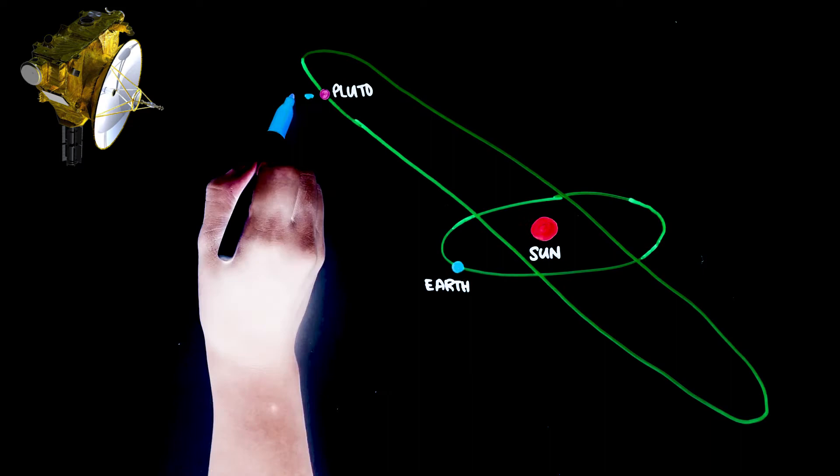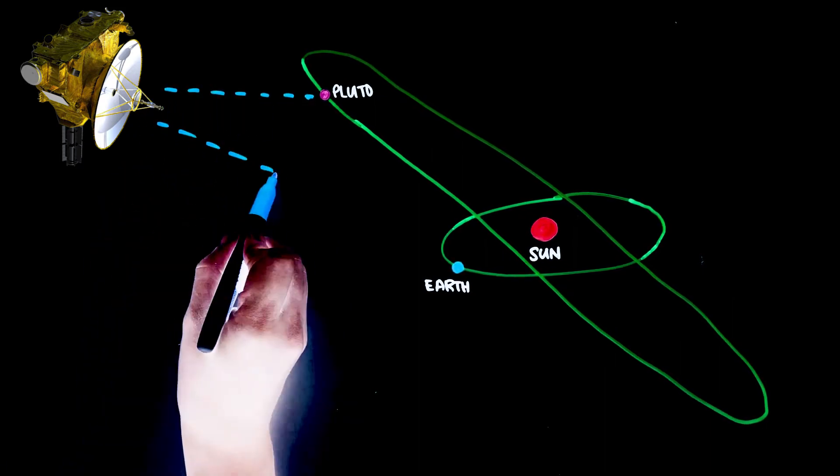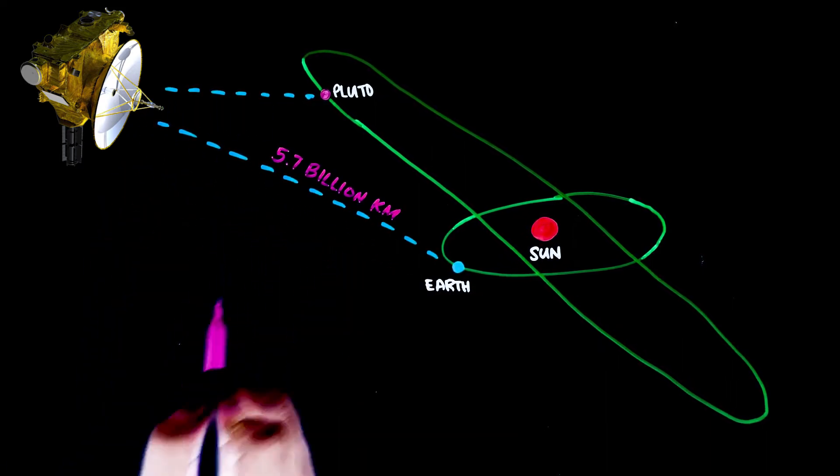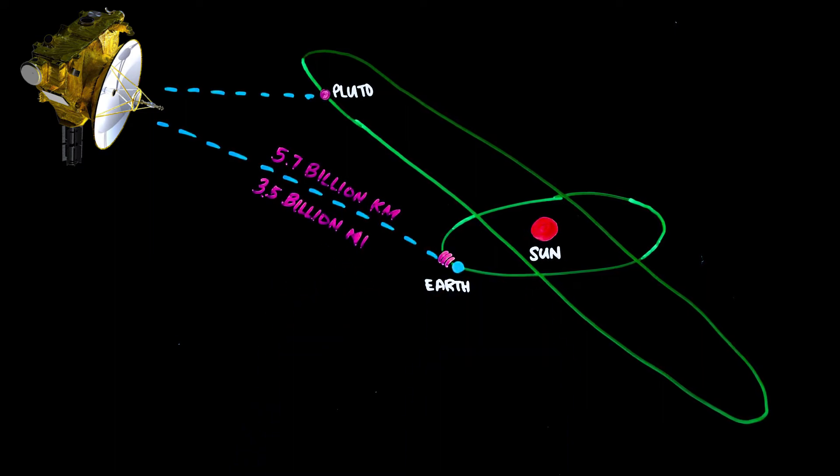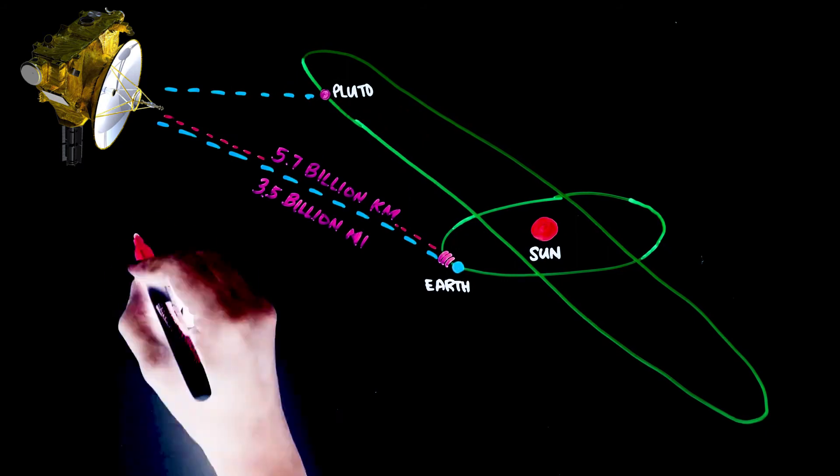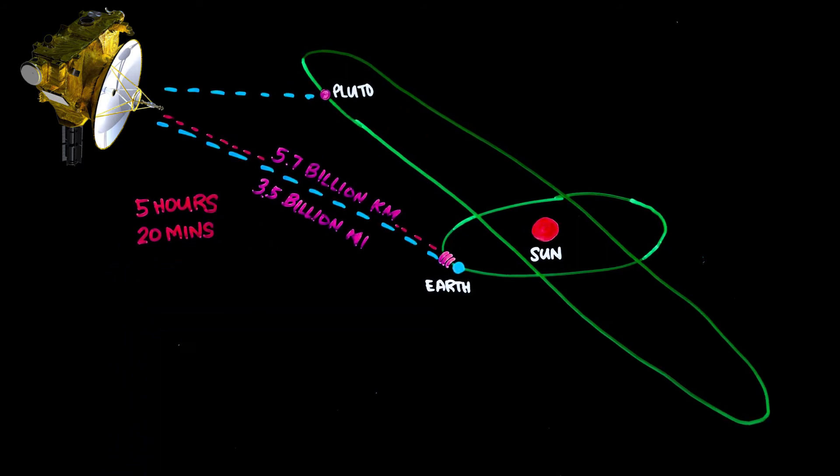It has now traveled half the distance from Pluto and is currently 5.7 billion kilometers from Earth. At that distance, radio signals sent from the operations team from here on Earth travel about 5 hours and 20 minutes to reach the spacecraft.